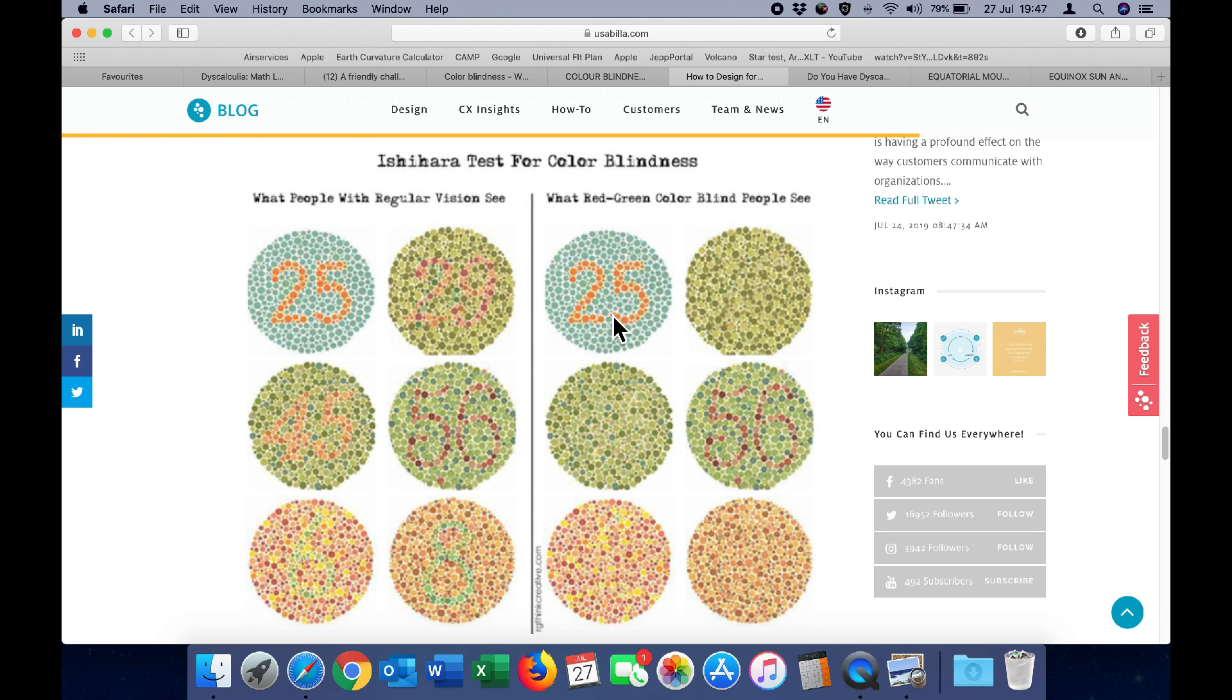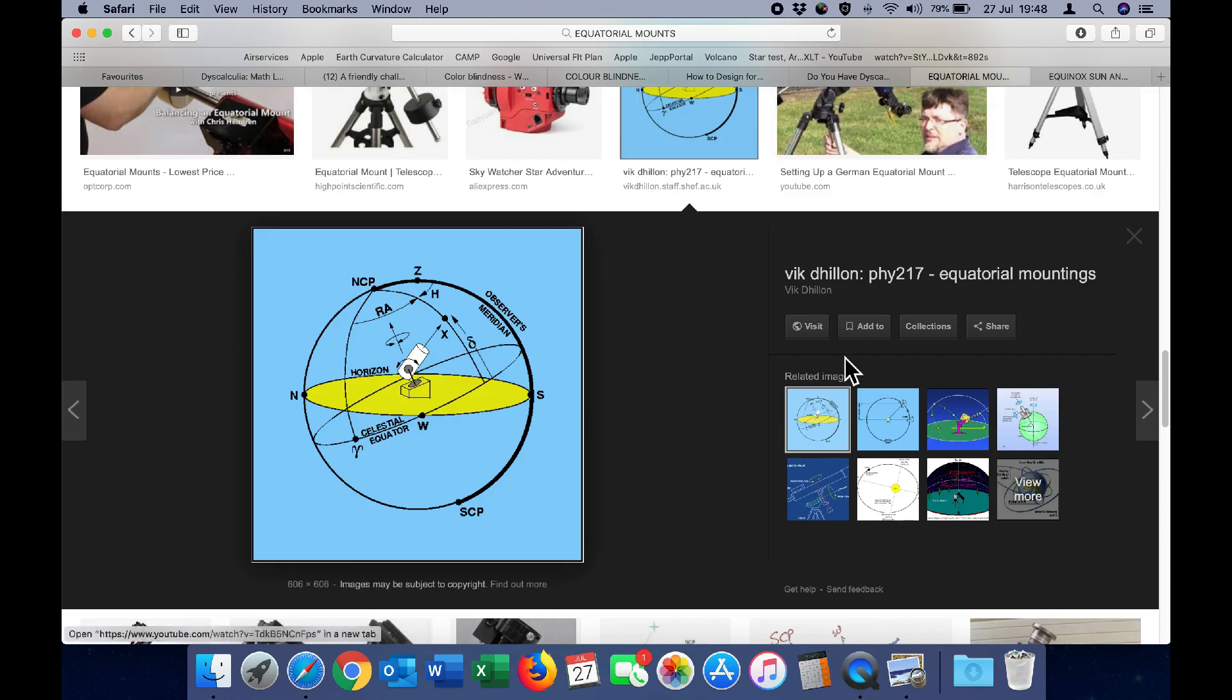However, to somebody that is colour blind, they may not see all of those numbers. In fact, looking at this one here, they can see nothing. Now, to a colour blind person, telling them that the number 29 is on that chart means nothing, because it doesn't matter how many times you tell them, they simply will not see it.